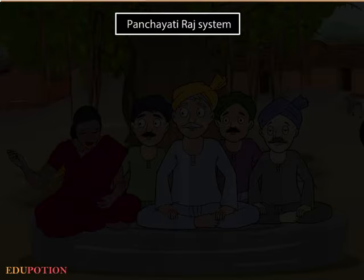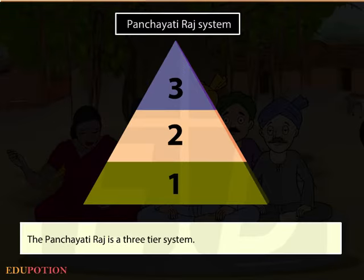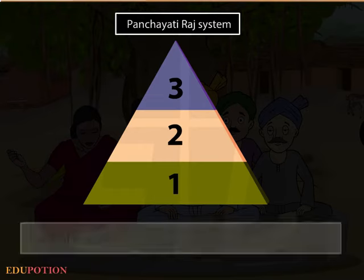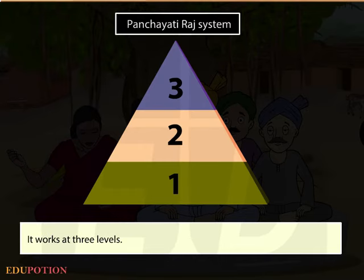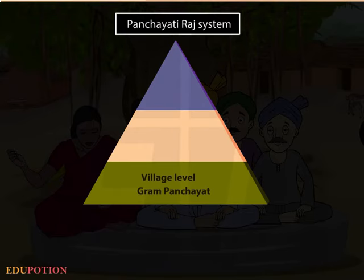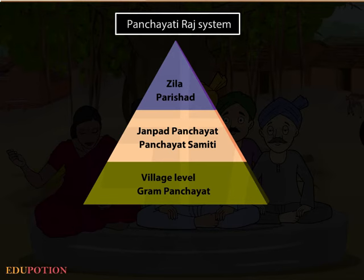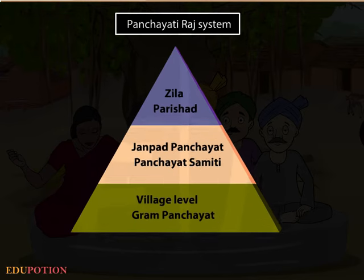The Panchayati Raj is a three-tier system. It works at three levels: the Gram Panchayat at village level, the Janpad Panchayat or Panchayat Samiti at the block level, and the Zilla Parishad at the district level.